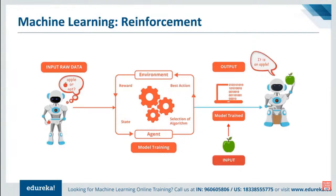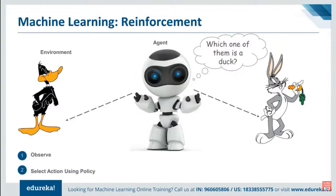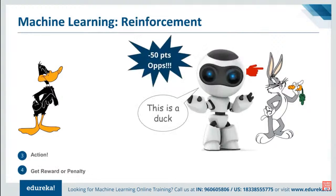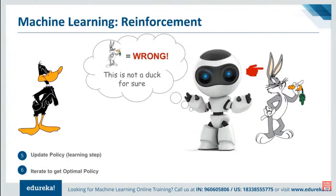In this image, you can see that the machine is confused whether something is an Apple or not. Using reinforcement learning, if it makes a correct decision it gets reward points, and in case of a wrong decision it gets a penalty. Once training is done, the machine can easily identify which one is an Apple. In another example, an agent must judge from the environment to find out which of two objects is a duck. The machine makes a wrong decision by choosing a bunny as a duck and gets a penalty — for example, minus 50 points. The machine then updates its policy, and this continues until the machine gets an optimal policy, knowing that a bunny is not a duck.